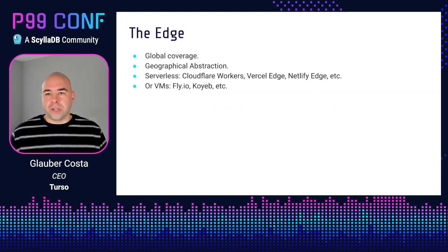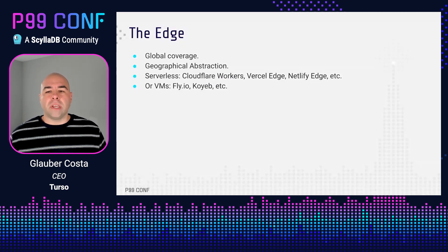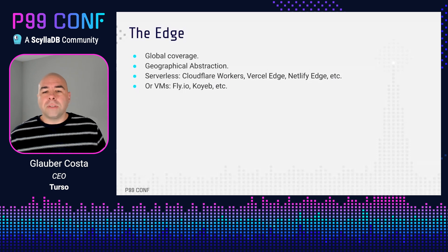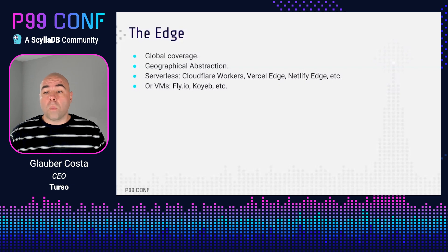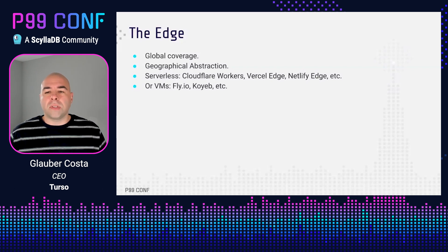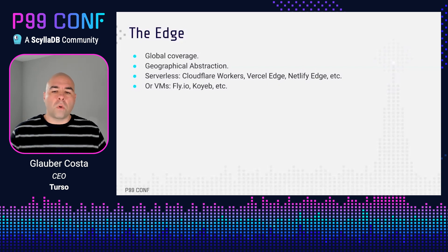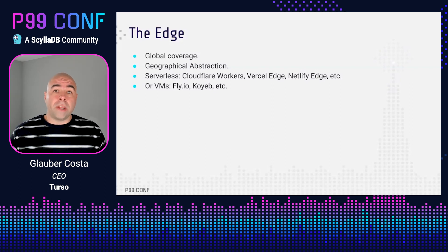Moving your backend code to the edge is how you provide every user, regardless of where they are, with a good experience. But what is the edge? Simply speaking, the edge is an abstraction that allows you to execute code in a variety of regions across the globe. How does it differ from simply putting a lot of VMs on different regions on your cloud provider? First, the edge tends to have a lot more regions — really looking for that extra mile of latency. Cloudflare, for example, runs their workers' platform in more than 300 locations across the globe. It really is like a CDN and the cloud had a child. Second, this is all abstracted away. Your code automatically runs in the location closest to your user without you having to worry about manually setting that up, routing requests, or anything of the sort. Location doesn't play a role at all when writing or configuring the application.